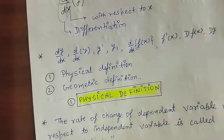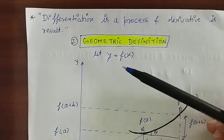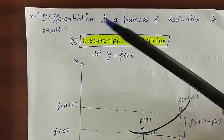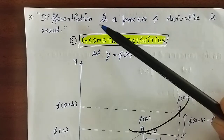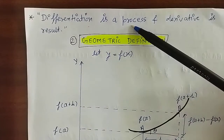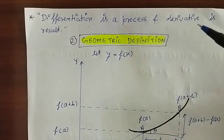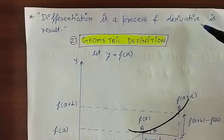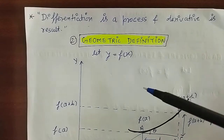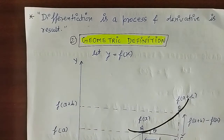यहाँ पर दो words commonly use किए जाते हैं: differentiation और derivative। Differentiation is a process, जबकि derivative उस process का result होता है।